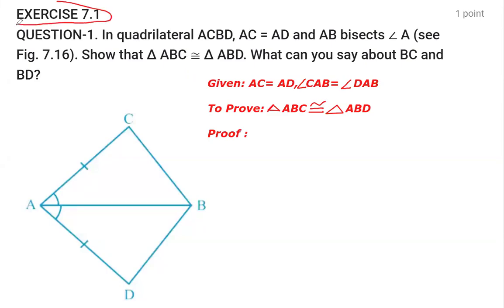This is Exercise 7.1, Question 1. In quadrilateral ABCD, we can see that AC equals AD, and AB bisects angle A. That is, angle CAB equals angle DAB—these two angles are equal. That's what bisect means.